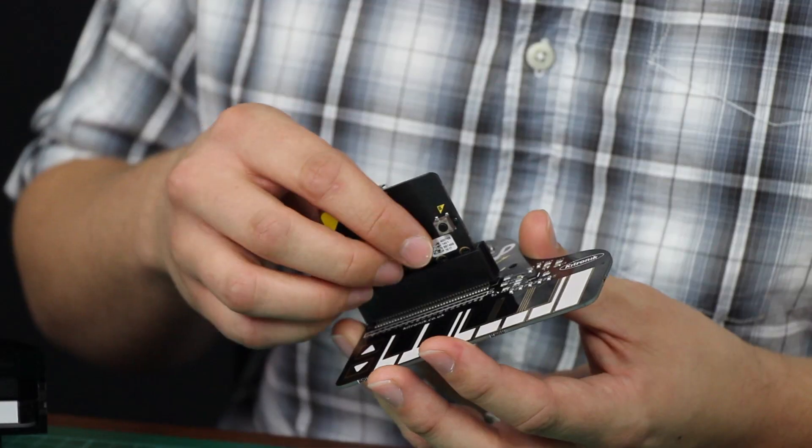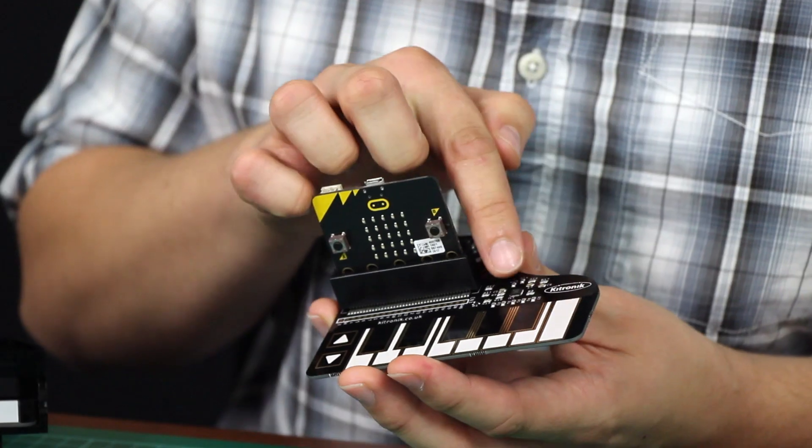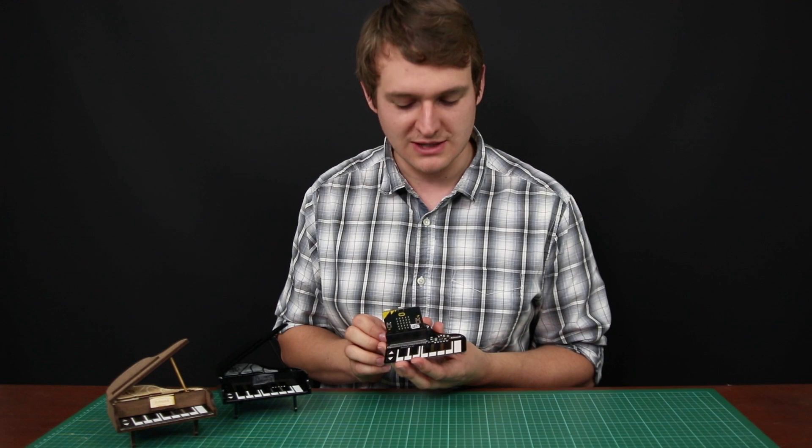The BBC Microbit, which plugs in here by the edge connector, processes the capacitive touch signals from an onboard capacitive sensor chip.